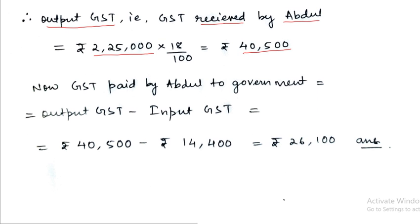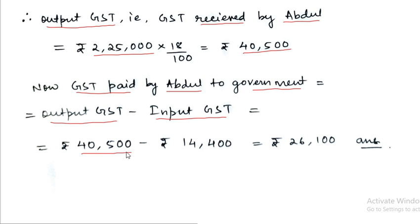Now, the GST paid by Abdul to the government will be output GST minus input GST. Output GST is Rs. 40,500 and input GST is Rs. 14,400. So GST payable = Rs. 40,500 − Rs. 14,400 = Rs. 26,100. This is our answer. Isn't it very simple, students?